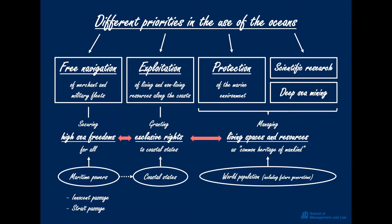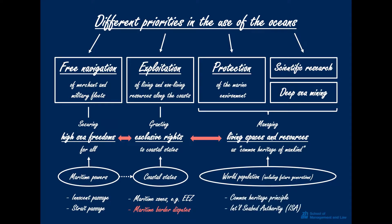As far as free navigation is concerned, the international law of the sea offers very specific rules for navigation through territorial waters and straits — these are the rules on innocent passage and straits passage, which we will discuss later in this lecture series. The exclusive rights of coastal states are defined in a detailed regulation of a number of maritime zones, including the so-called exclusive economic zone, which is by far the most important. The protection of the marine environment and the legal framework for scientific research and deep sea mining are dominated by the common heritage principle. The institution tasked to take care of this heritage is the International Seabed Authority.